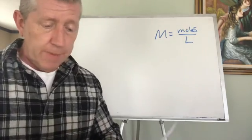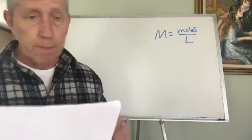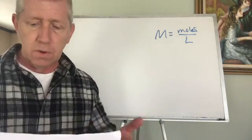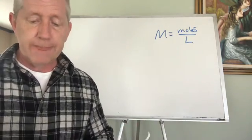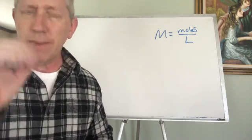In a titration experiment, 20.4 milliliters of 0.883 molar formic acid, formic acid is HCOH, which neutralizes 19.3 milliliters of barium hydroxide. What's the concentration of the barium hydroxide solution?